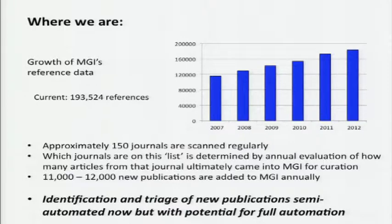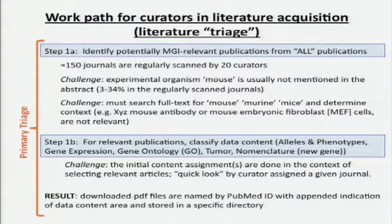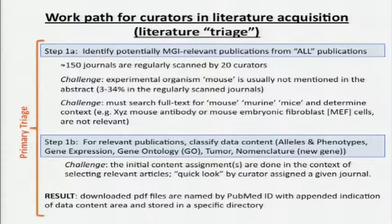The identification and triage of new publications is semi-automated, and I'll show you a bit about the tools we're using right now. But we really would like to get this fully automated — it's a big time sink that we would really like to get rid of for our staff. Here's a bit more detail about what happens in this literature triage process.